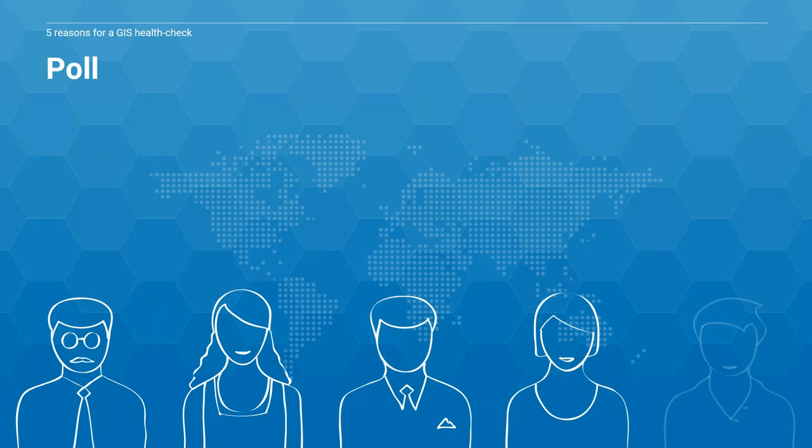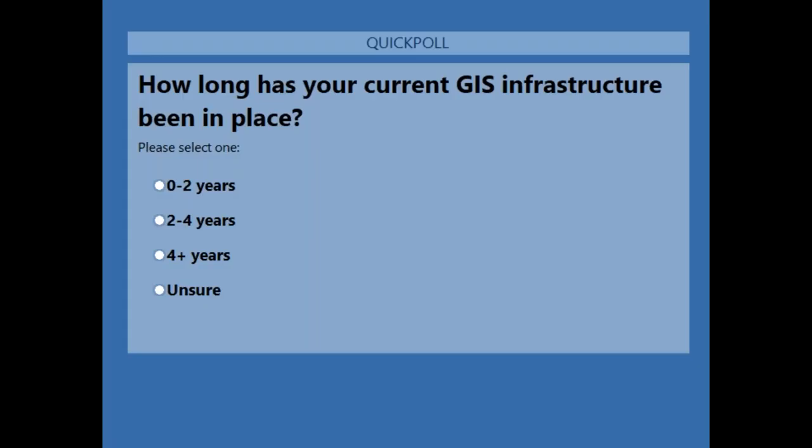We like to make these webinars as interactive as possible, so one of the first things we do is run a poll to see why people have attended today. The first question is: how long have you had your GIS infrastructure in place? This helps us determine why you've come — is it because you've had GIS for years and know it's not performing as well as it should? Or have you just invested in GIS and want to ensure you've optimised it to get the best performance?